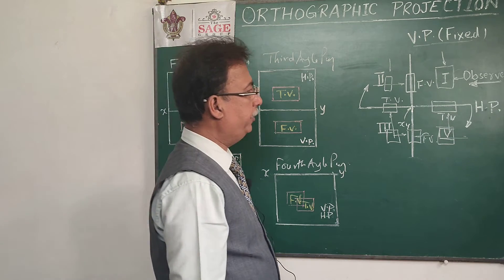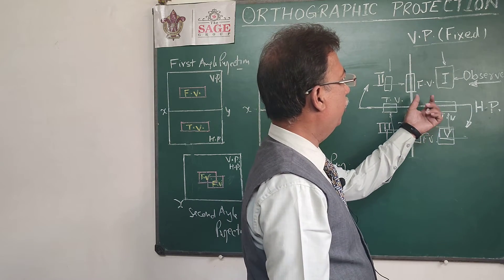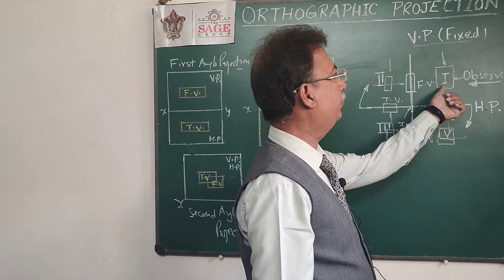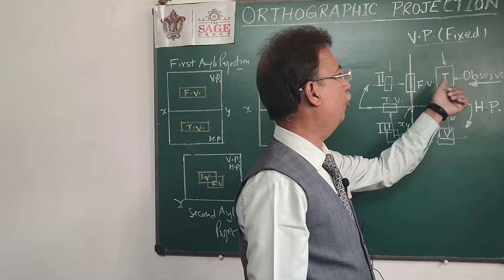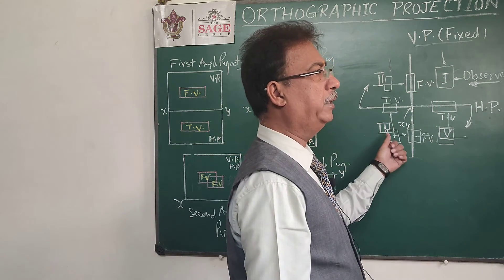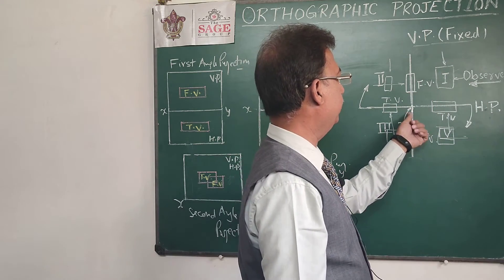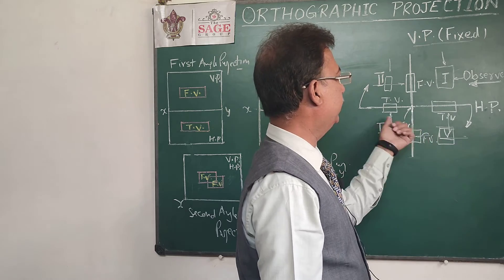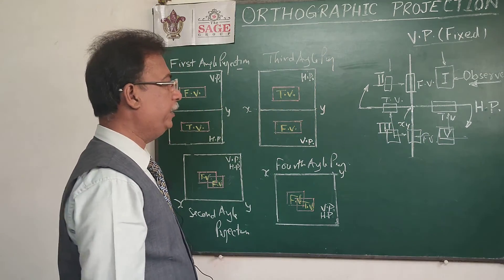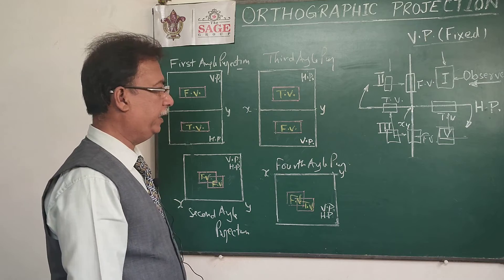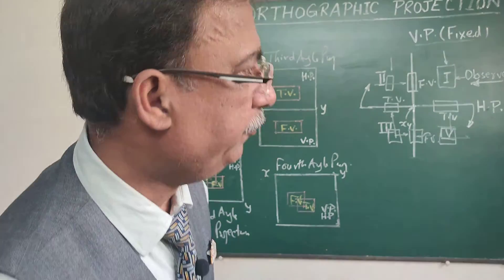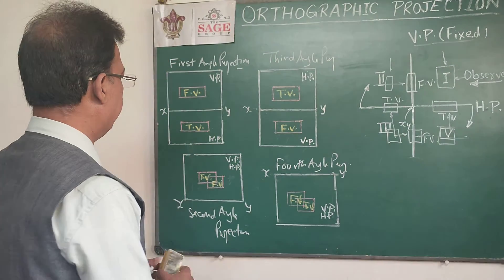When the object is in the first quadrant, the object will be between the observer and the plane. In the third quadrant, the plane comes between the object and the observer. That is how you can differentiate the different types of quadrant systems.